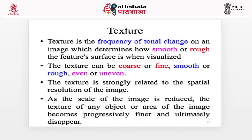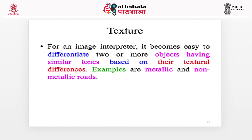The next important element is texture. Texture is the frequency of tonal variation on an image, which determines how smooth or rough the feature surfaces appear when visualized. The texture can be coarse or fine, smooth or rough, even or uneven. Texture is strongly related to the spatial resolution of the image. For example, as the scale of the image is reduced, the texture of any object or area becomes progressively finer and ultimately disappears. For an image interpreter, it becomes easy to differentiate two or more objects having similar tones based on textural differences. An example case is metallic and non-metallic road discrimination.